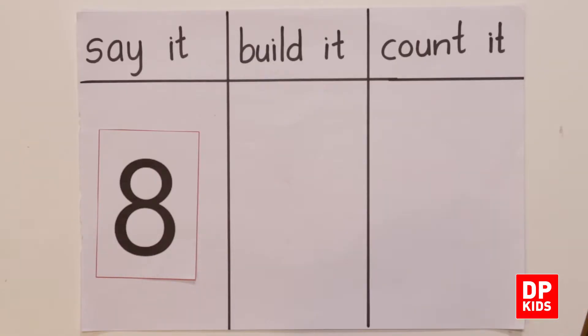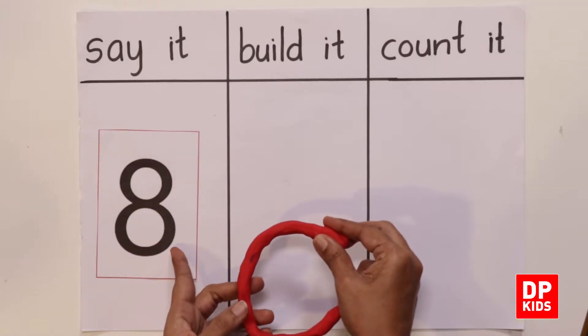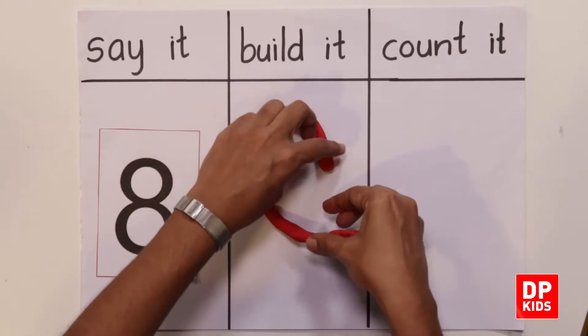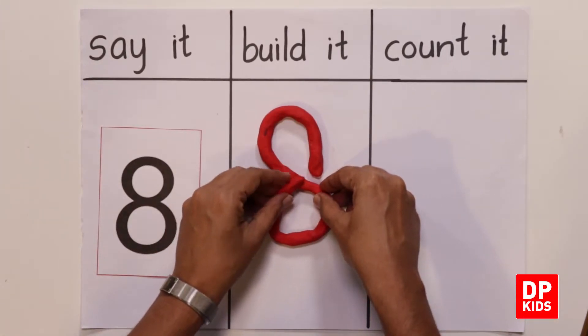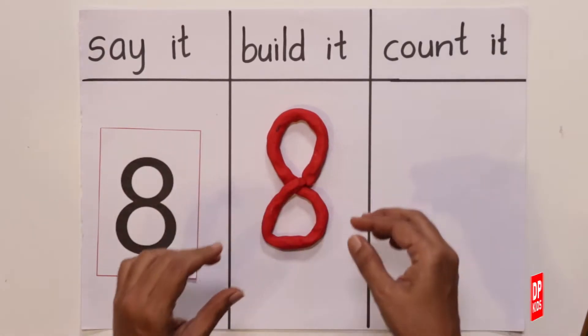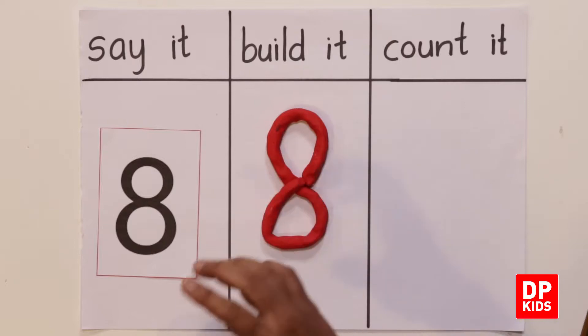Spiders won't come. Look here, number eight. Build it. Here we go. We have a nice clay. Two circles. Let's make number eight. Two circles, and come back. Just like a snake, and come and join.